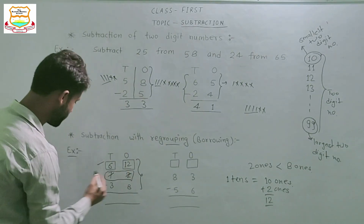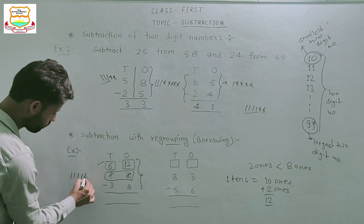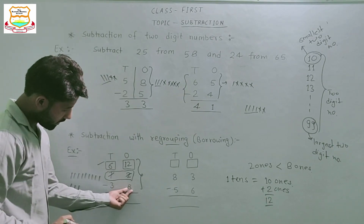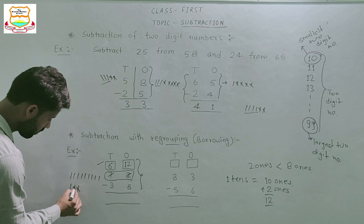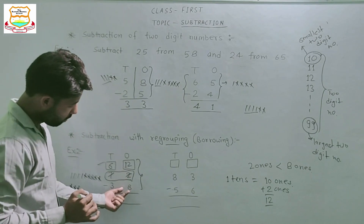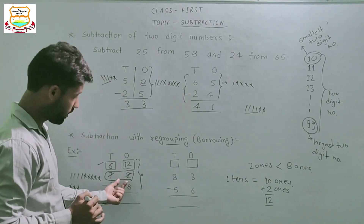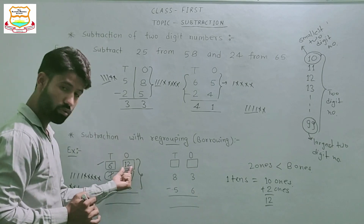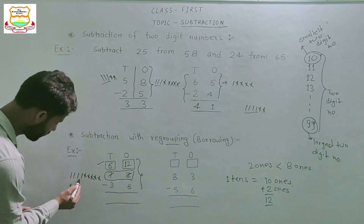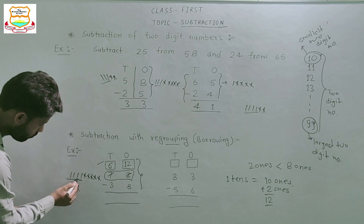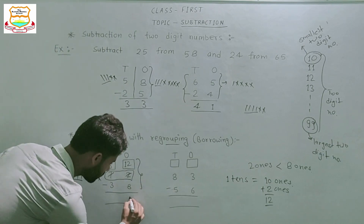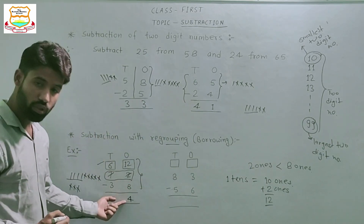Now 12 minus 8: draw 12 sticks — 1 through 12. Now subtract 8 and cut 8 sticks. How many sticks are remaining? Count: 1, 2, 3 and 4. Means 12 minus 8 equals 4.